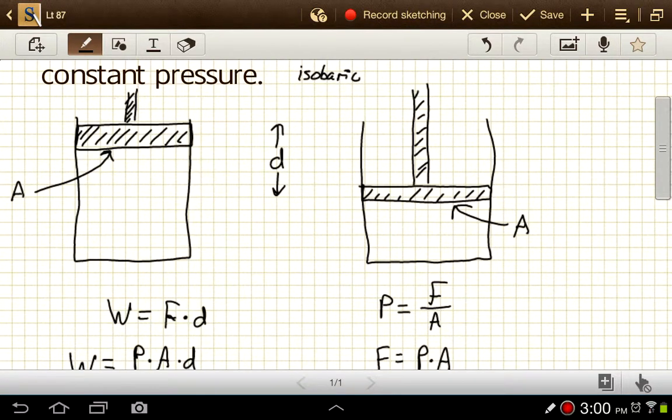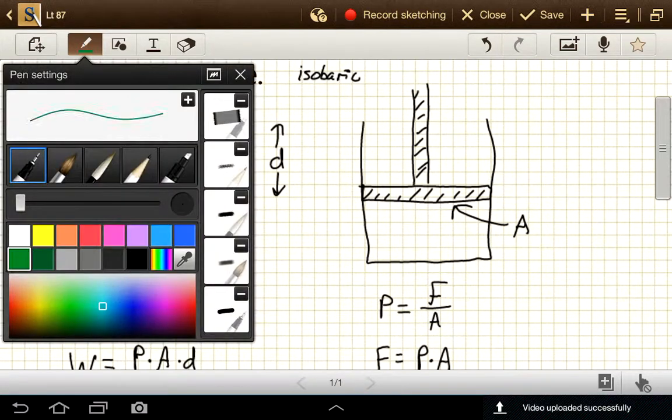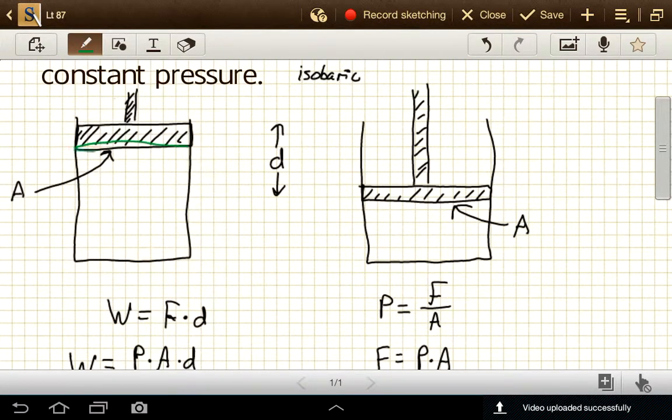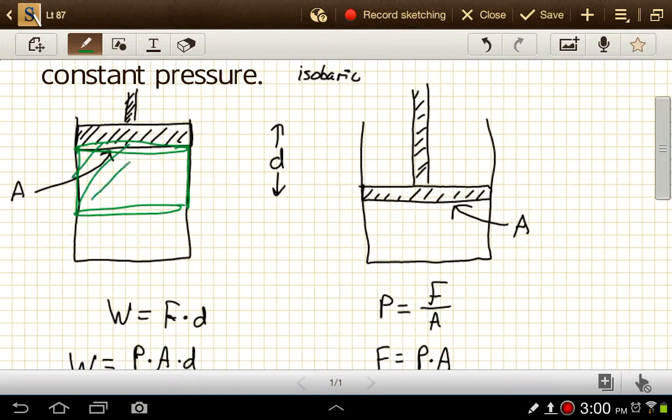That area times this distance that the cylinder moves, well that's actually the same as the equation for the volume of this cylinder. And that volume right there represents the amount that the volume of the space available to the gas has changed.